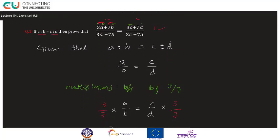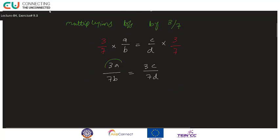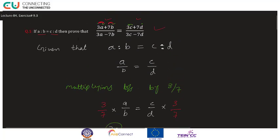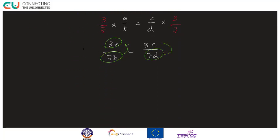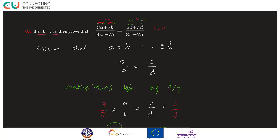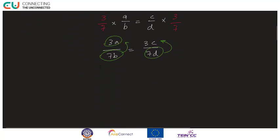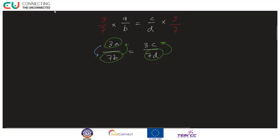Ab thoda dekh lete hain: mujhe chahiye 3A plus 7B upar aur 3A minus 7B neeche. 3A numerator hai aur 7B denominator hai — mujhe yeh upar chahiye. Isi tarah right hand side mein 3C plus 7D upar chahiye. Jo denominator hai use upar numerator mein lana hai — yeh componendo theorem hai. Aur neeche 3A minus 7B chahiye — numerator minus denominator — yeh dividendo theorem hai.